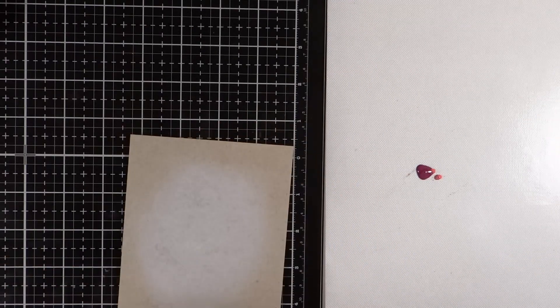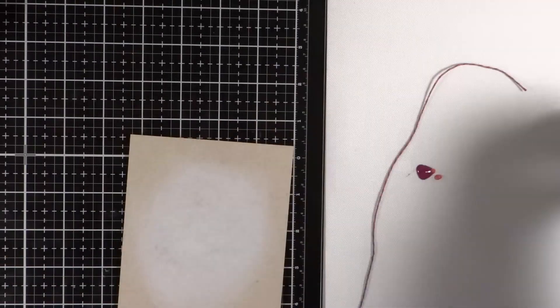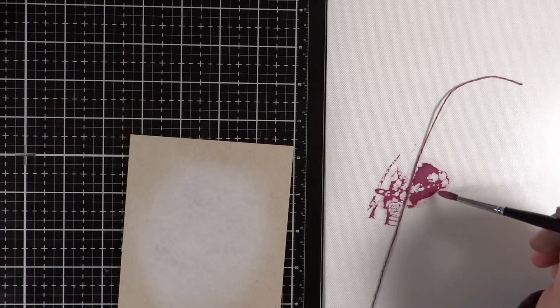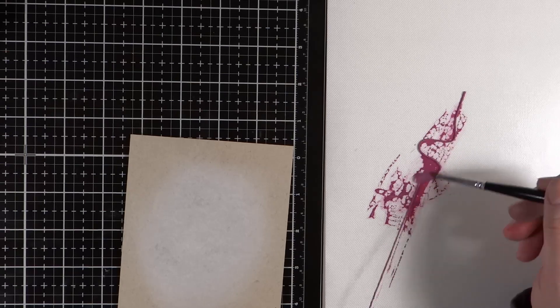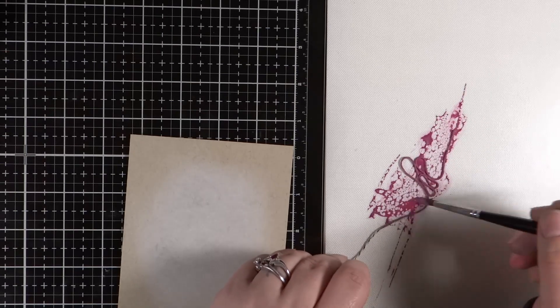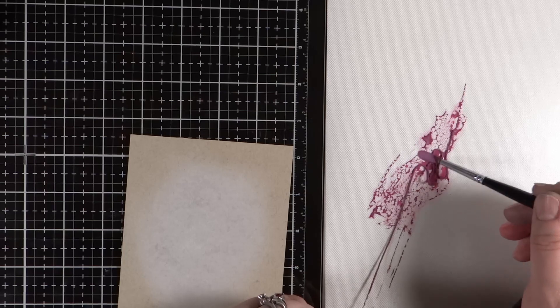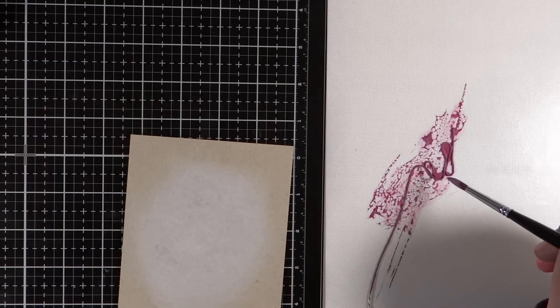I've seen this technique around a little bit and I wanted to give it a shot but with my own spin on it. I'm going to be using some distress oxide reinkers and I've mixed together wilted violet and seedless preserves.